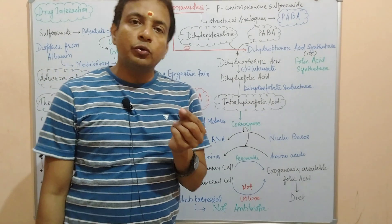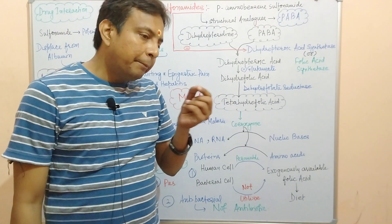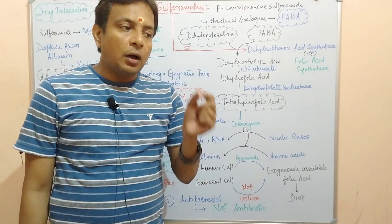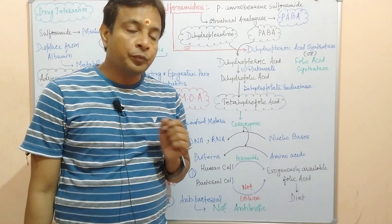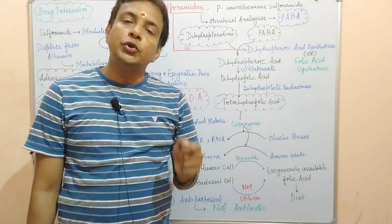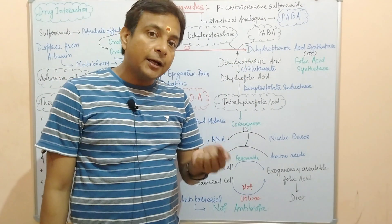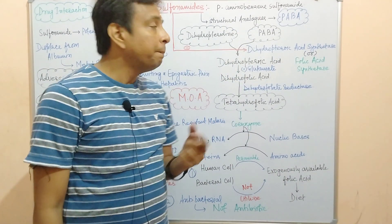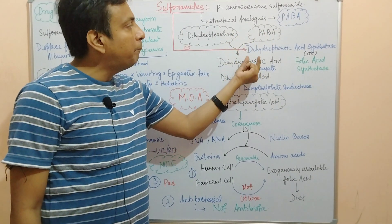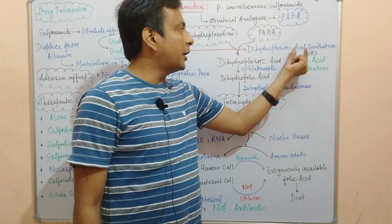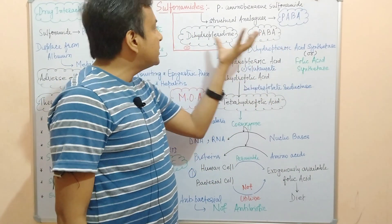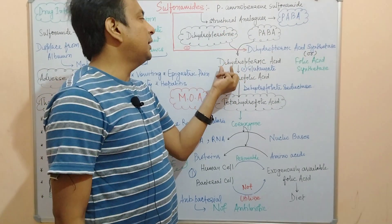Sulfonamides are bacteriostatic — they inhibit bacterial growth and replication. Now, dihydropteroic acid is formed when para-aminobenzoic acid combines in the presence of an enzyme known as dihydropteroic acid synthetase, which is also called folic acid synthetase B. In the presence of this enzyme, these two molecules combine to form dihydropteroic acid.